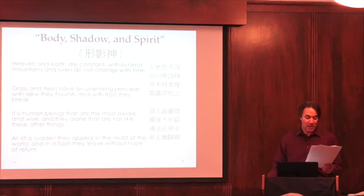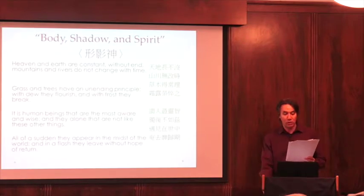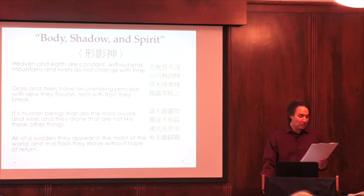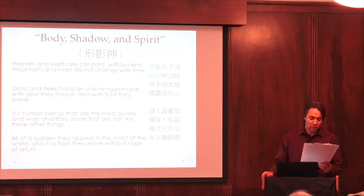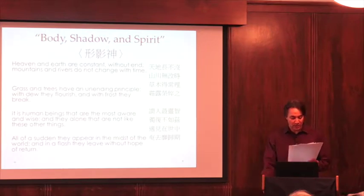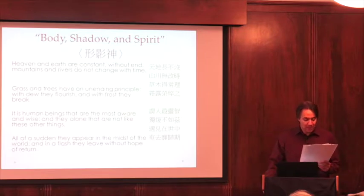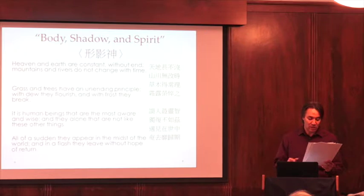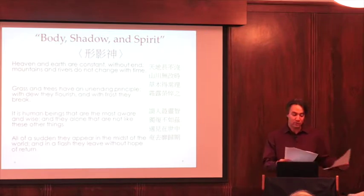The poem begins with Body stating: Heaven and earth are constant without end. Mountains and rivers do not change with time. Grass and trees have an unending principle. With dew they flourish and with frost they break. It is human beings that are the most wise and aware, and they alone that are not like these other things. All of a sudden they appear in the midst of the world, and in a flash they leave without hope of return.